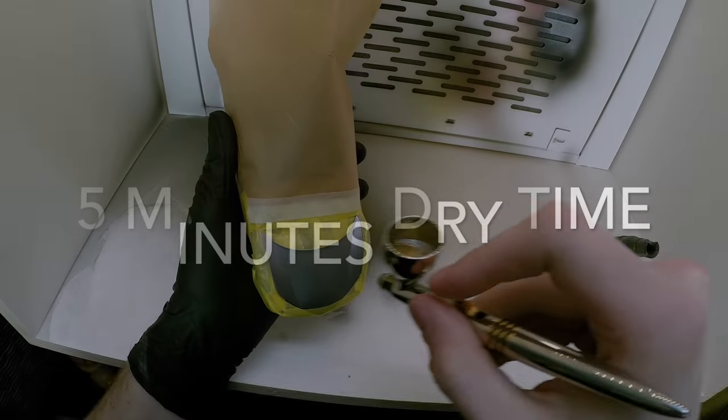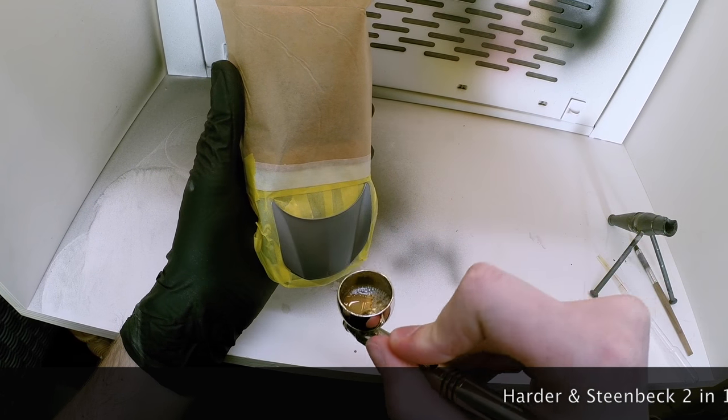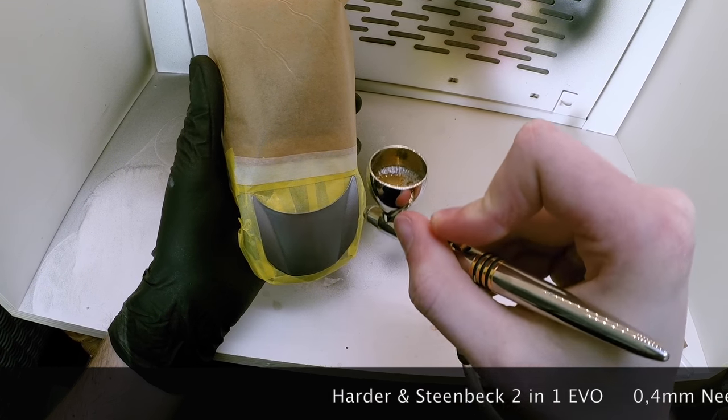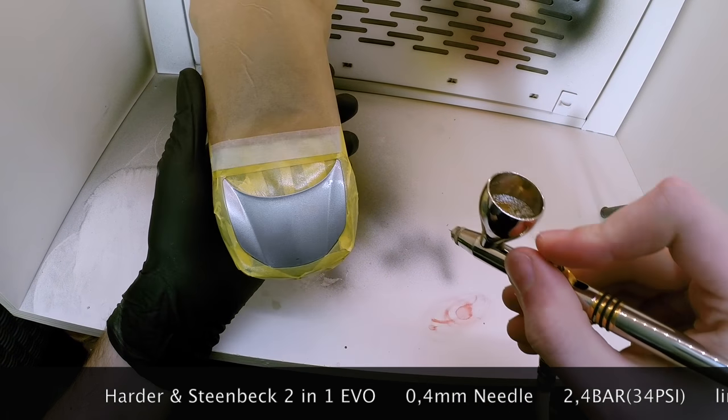After about 5 minutes of dry time, I moved on to applying the second and final coat. The first pass was still a bit lighter, there was still a lot of orange peel left, so I went over it again to finish it nice and smooth to a diamond glossy finish.